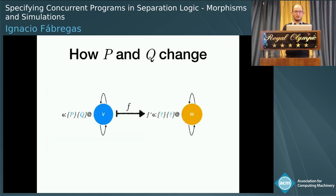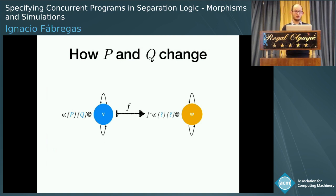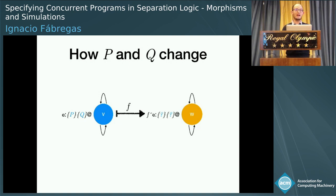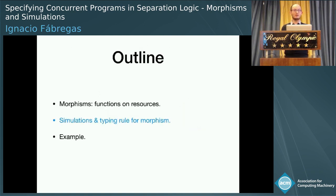Of course, the type of the program also includes the precondition and postcondition. So we will need to change the precondition and postcondition accordingly. This is what I'm going to show you now — this is where the typing rule appears.